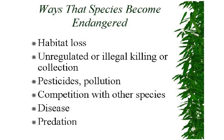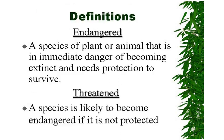If we know the ways that species become endangered, we can prevent that. Number one is habitat loss — stop deforestation, stop construction of buildings everywhere. Number two, unregulated or illegal killing or collection. Then pesticides and pollution, competition with other species, disease, and predation. We need to figure out how to solve these problems. Endangered means a species in immediate danger of becoming extinct and needing protection to survive. Threatened means a species likely to become endangered if not protected — threatened comes first, and may lead to endangered.